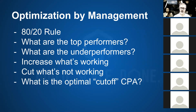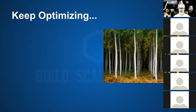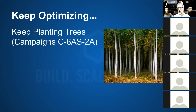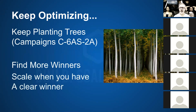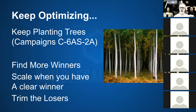Keep reiterating that process every day. Keep planting trees — launching more campaigns, setting up more campaigns — forming the habit of fueling your business and growing your campaigns. You'll find more winners by doing that, and then you scale when you have a clear winner. In the meantime, trim the losers and always manage your campaigns with the goal of doing more of what's working and cutting out what's not.